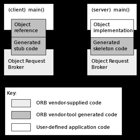The CORBA interface definition language provides the language and OS-neutral inter-object communication definition. CORBA objects are passed by reference, while data are passed by value. The combination of objects by reference and data by value provides the means to enforce strong data typing while compiling clients and servers, yet preserve the flexibility inherent in the CORBA problem space.